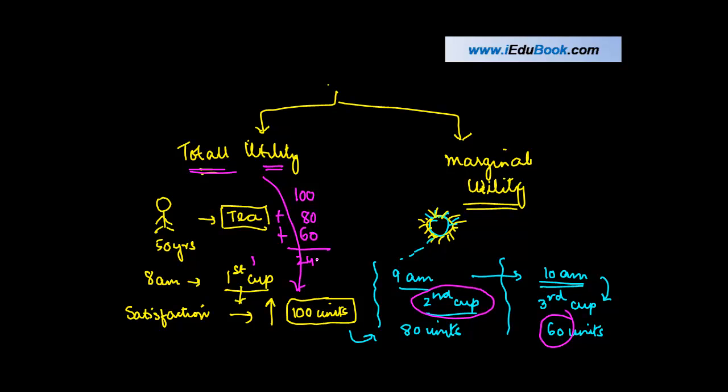Or 240 units. Total utility is also referred to as—we'll come back to the formula a little later. Let me first explain this to you, and then it will be clearer.